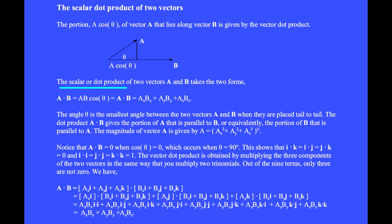The scalar or dot product of two vectors A and B is pronounced A dot B, and it's defined to be the magnitude of A times the magnitude of B times the cosine of the angle between the two vectors when they are placed tail to tail.